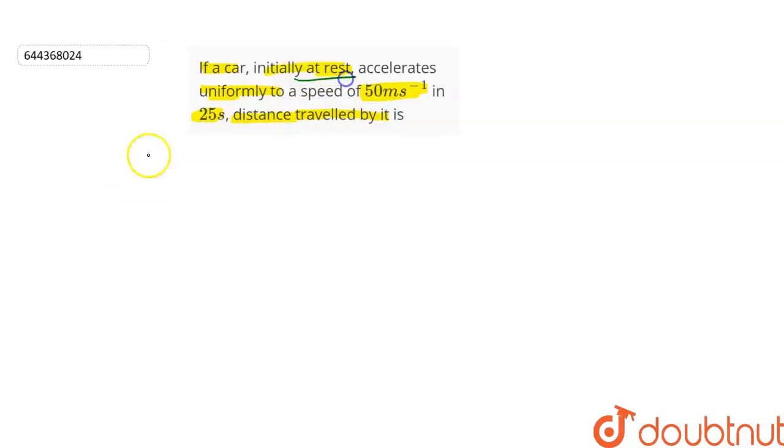As the car is initially at rest, the initial velocity u will be equal to zero. And it accelerates uniformly to a speed of 50 meters per second.